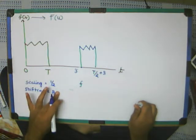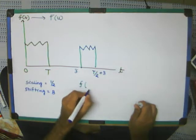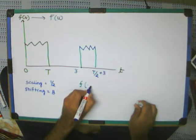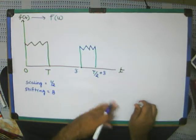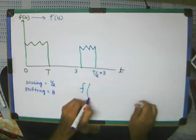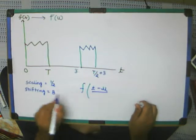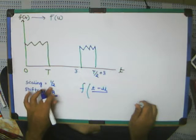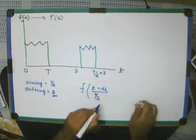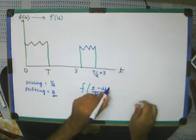So what am I going to do? First of all, scaling by factor of 1 by 2 means, see, the standard form of any function is T, shifted by U, first of all scaled by S. The scaling factor here is half, scaled by 1 by 2, and shifted by 3.